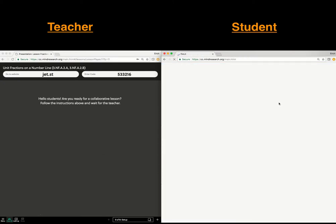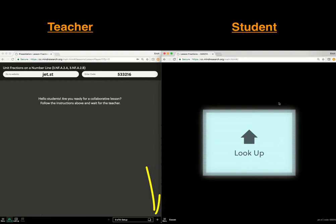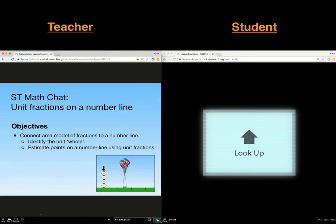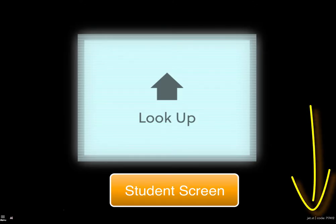Once students have logged in, use the forward arrow to move through the lessons. Late students can join at any time by entering the class code which is in the corner of every student's screen.